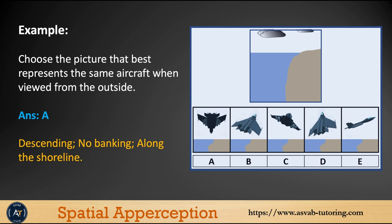Another example: the picture that best represents the same aircraft point of view from outside — you can see the horizon is on the top of the image, which means the aircraft is descending. The correct answer is B, and it's flying along the shoreline because the view is between land and sea.